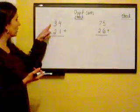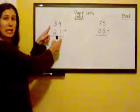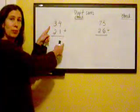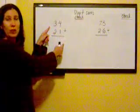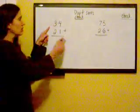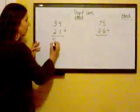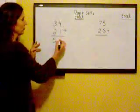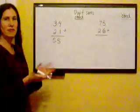And so 2 plus 3 is 5 and we just kind of do a quick scan to the column before and just see is there anything that needs to be carried over. In this case there isn't. So 3 plus 2 is 5, 4 plus 1, 5, 55.